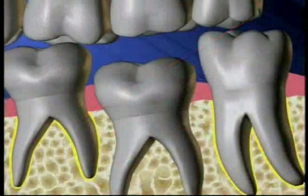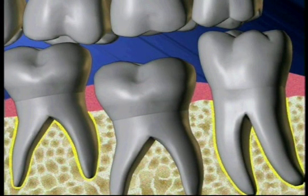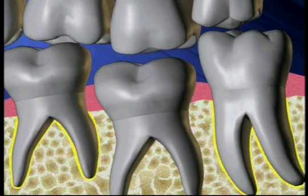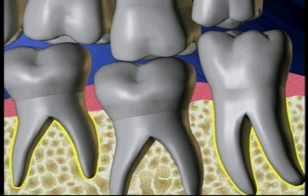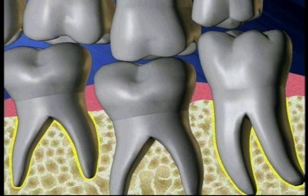Second, the upper teeth need the lower teeth for support. With the tooth submerged, the opposing upper tooth grows out of the socket and also loses its normal alignment.